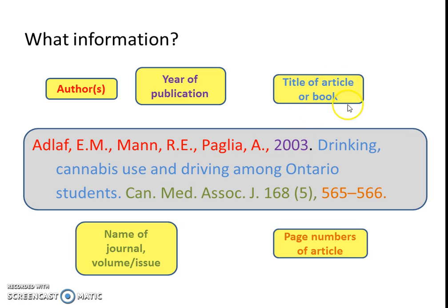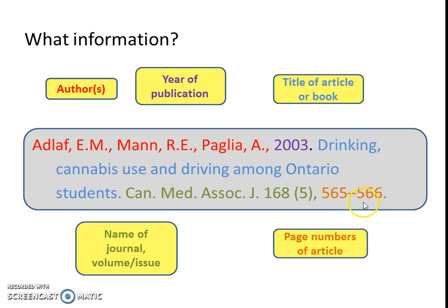Then we have the title of the article or the book — 'Drinking, Cannabis Use and Driving Among Ontario Students' — and then the name of the journal and the volume or issue: the Canadian Medical Association Journal, abbreviated. The volume or issue is 168, and the page numbers are 565 to 566. It's a short article.